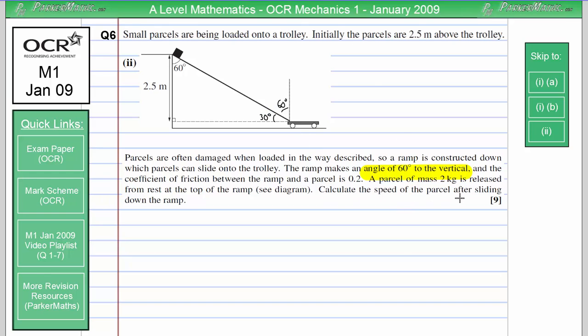So to calculate the speed of the parcel, we're going to first need to know the acceleration of the block down the ramp. In order to find the acceleration, we're going to need to work with the forces that are acting on the block. So I'm going to draw a force diagram over to the right. Remember, our angle between the slope and the ground is 30 degrees.